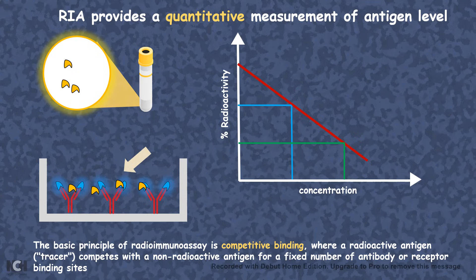If you have a higher concentration, radioactivity would be very low — the rate of decrease of radioactivity would be quite high. If you have a low level of antigen in the patient sample, radioactivity won't fall that much. So the percentage by which radioactivity is reduced gives us a quantitative measure of the amount of antigen present.